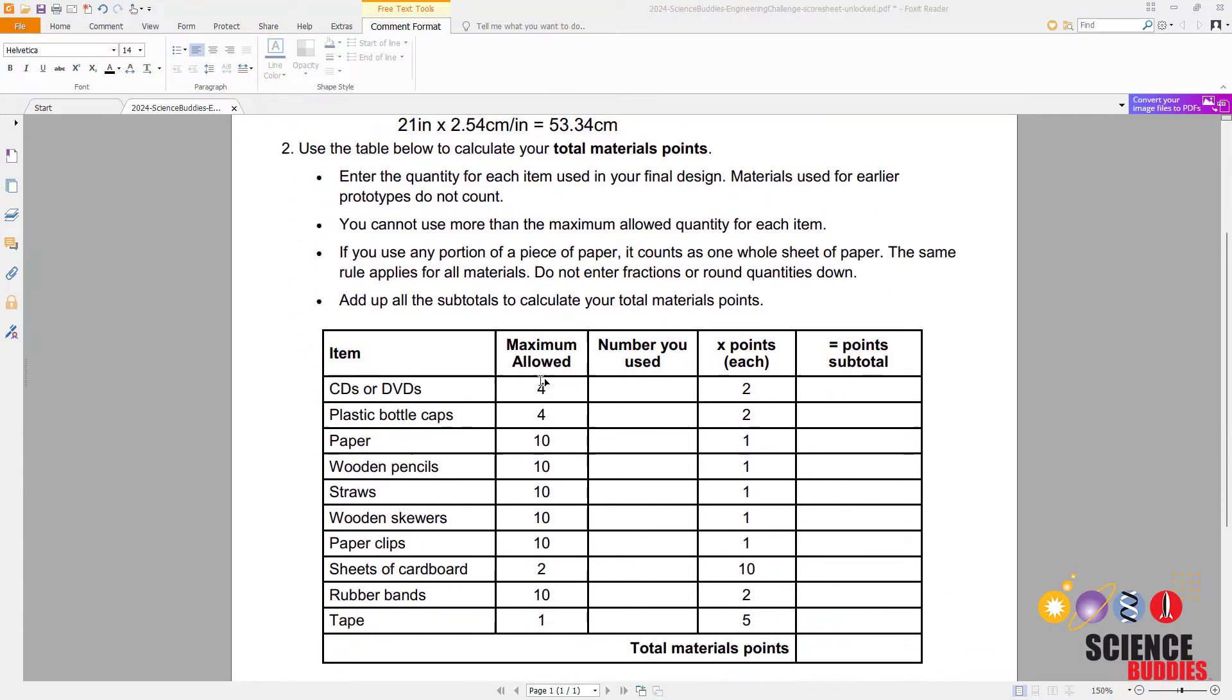Next you can use this table to calculate your total materials points. The first thing you do there is go through this column and enter the quantity of each material that you used.